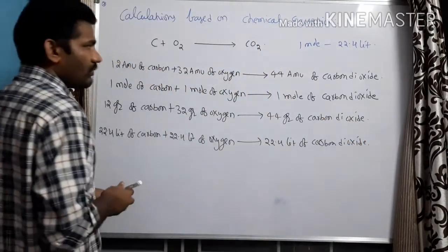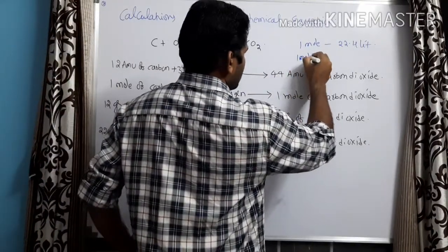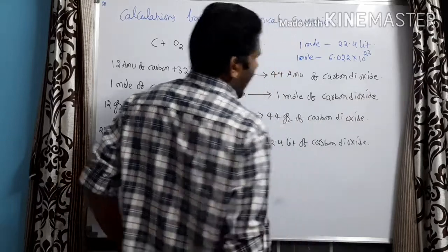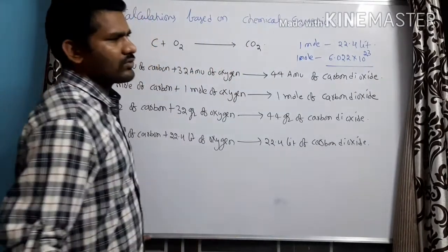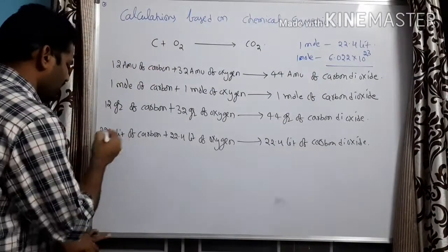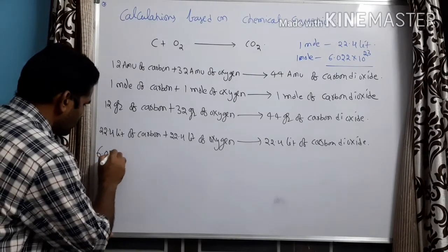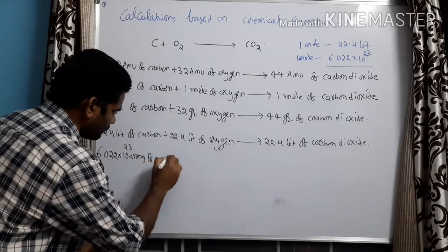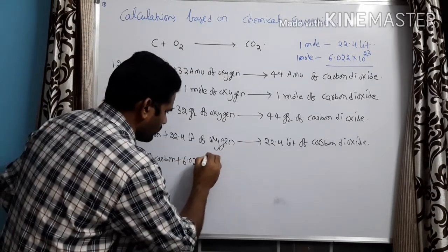In the mole concept, there is another piece of information: one mole contains 6.022 × 10²³ atoms or molecules. This value, 6.022 × 10²³, is called Avogadro's number. When I apply this concept to the equation, I can rewrite it as: 6.022 × 10²³ atoms of carbon reacts with 6.022 × 10²³...